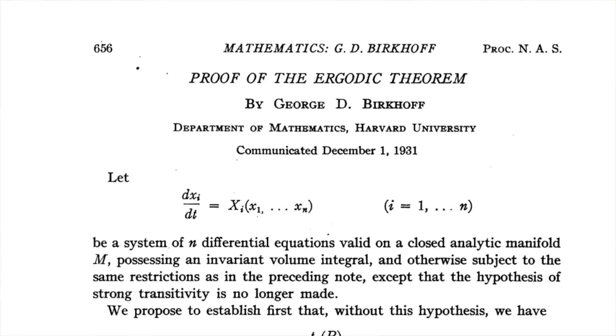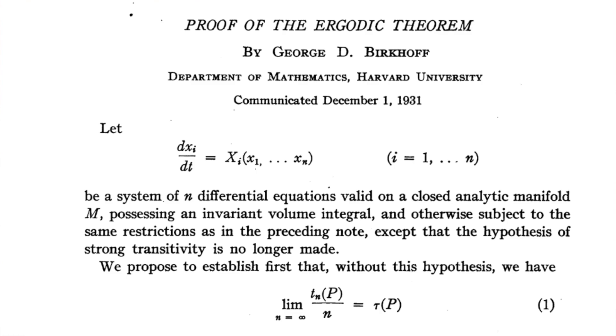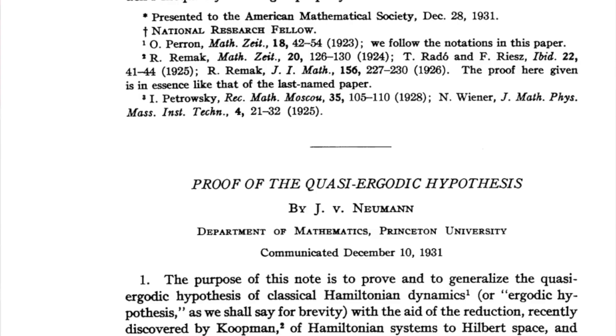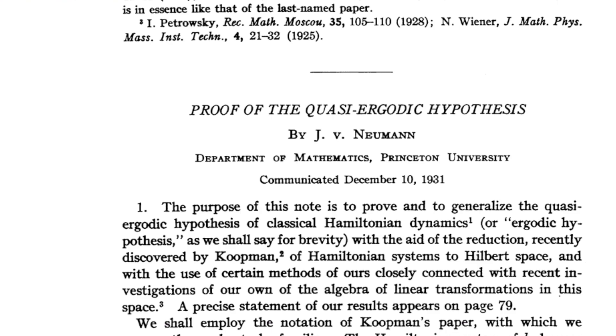Fast forward 150 years and physicists start using randomness in their models of the world too. As they do this, they discover an alternative to expected value theory. Often what matters is not what is mathematically expected, but what happens on average over time. The physicists called this the ergodicity problem. What's mathematically expected in the long run may be different from what's mathematically guaranteed to happen in the long run.